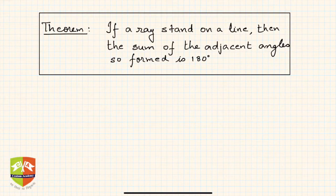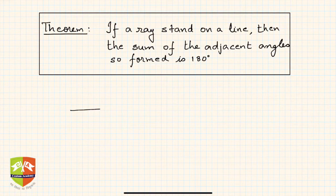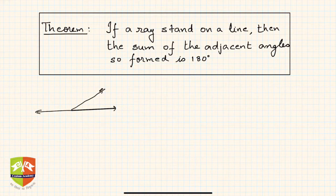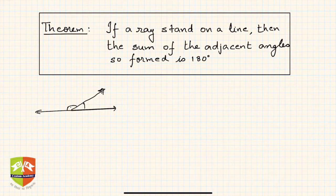Hello friends. In the last session we understood a concept called linear pair — if two adjacent angles are there in such a way that the uncommon arms are in opposite directions, then the two angles form a linear pair. Now we are going to prove that if a ray stands on a line, then the sum of the adjacent angles so formed is 180 degrees.